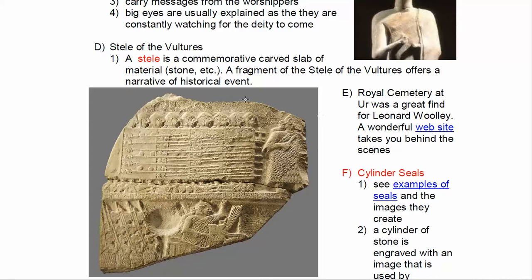A stele is a commemorative slab of stone, often with images carved into it. It might be a victory stele for a battle that was won. Some of you have heard of the Law Code of Hammurabi — that was one of the many law codes of the ancient world, and those laws were carved on a large slab called the Code of Hammurabi.